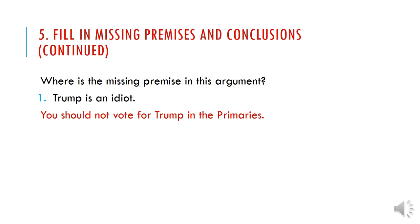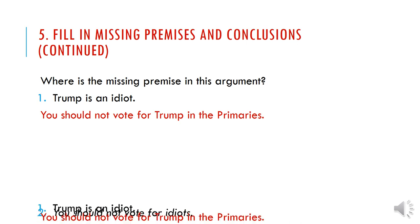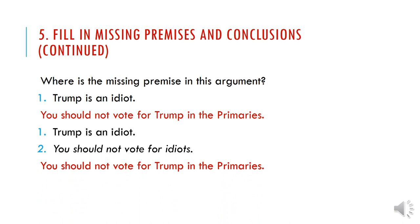Remember: pretend the premises are true and ask yourself, can we deny the conclusion? If you cannot deny the conclusion and are forced into believing it, the argument is valid. If you can think of a way to deny the conclusion, then it is invalid. Once the argument is valid, we ask ourselves if the premises are all true. If they are, then we have a sound argument. If there is an obviously false premise, then the argument is valid but unsound.